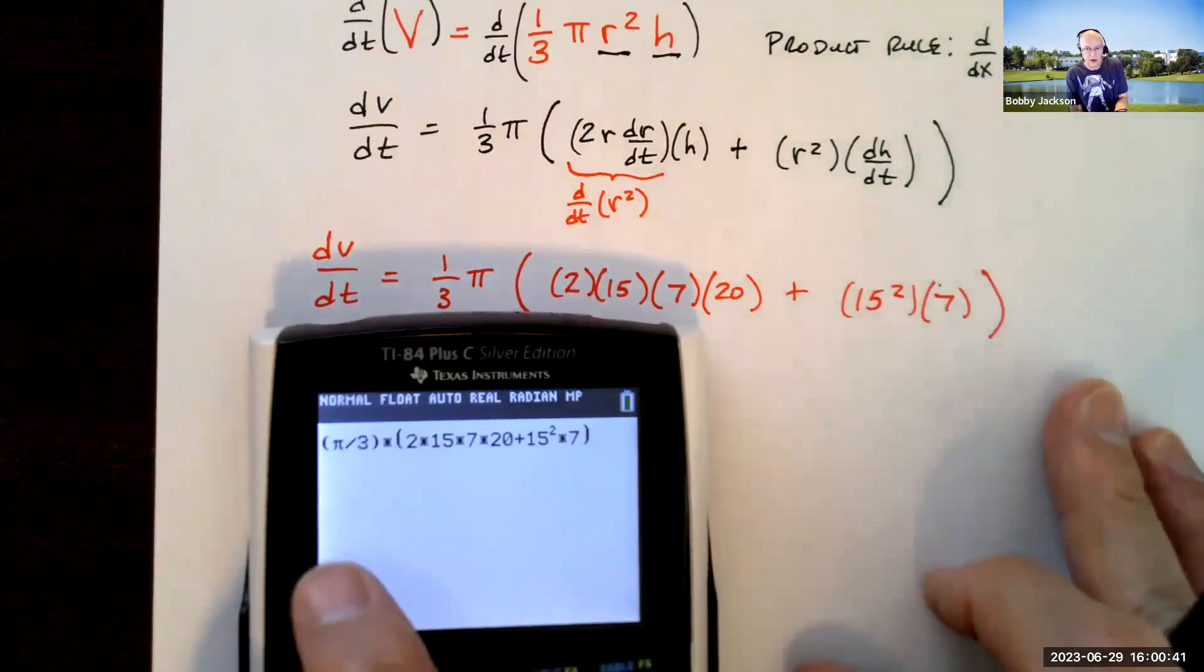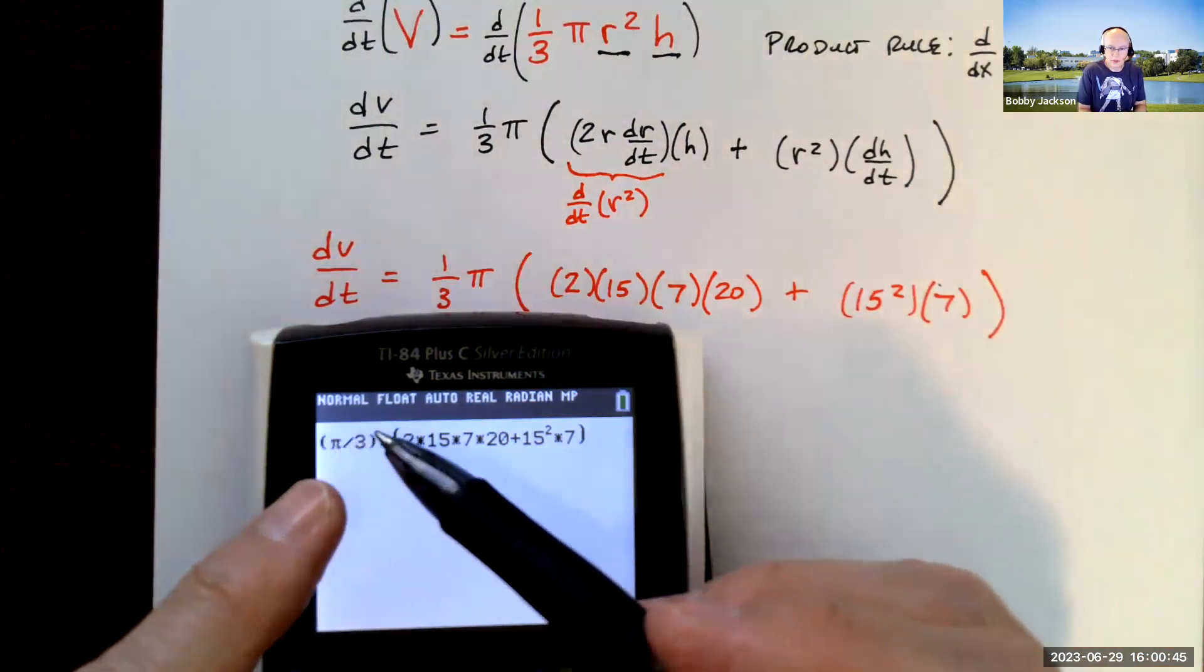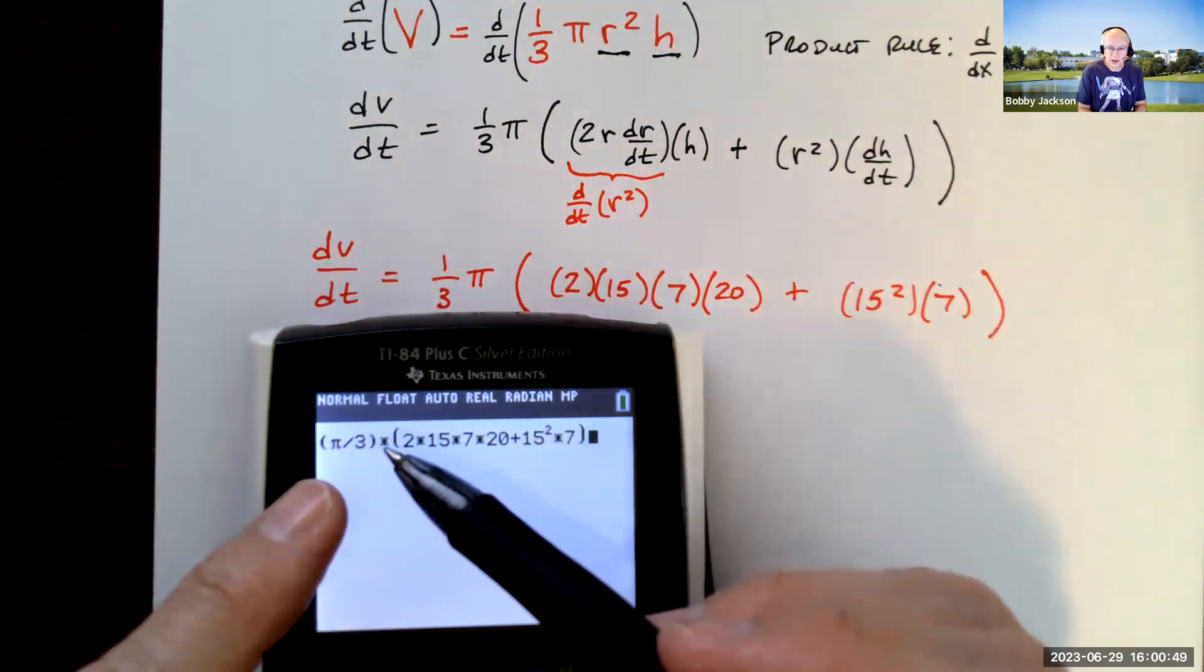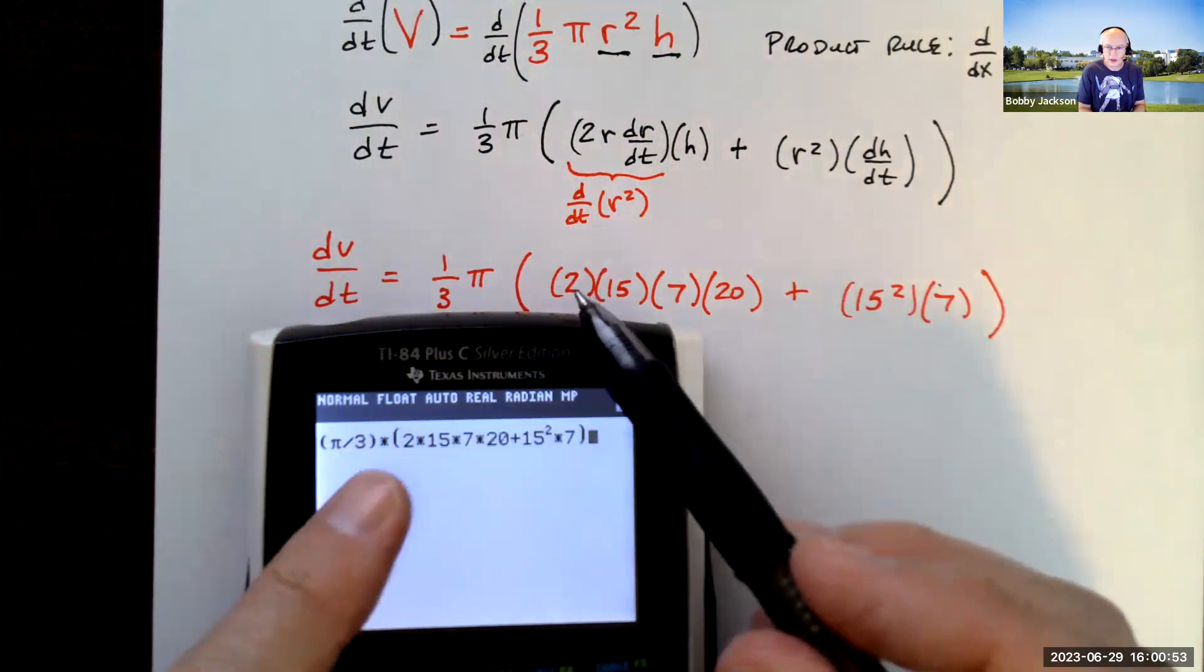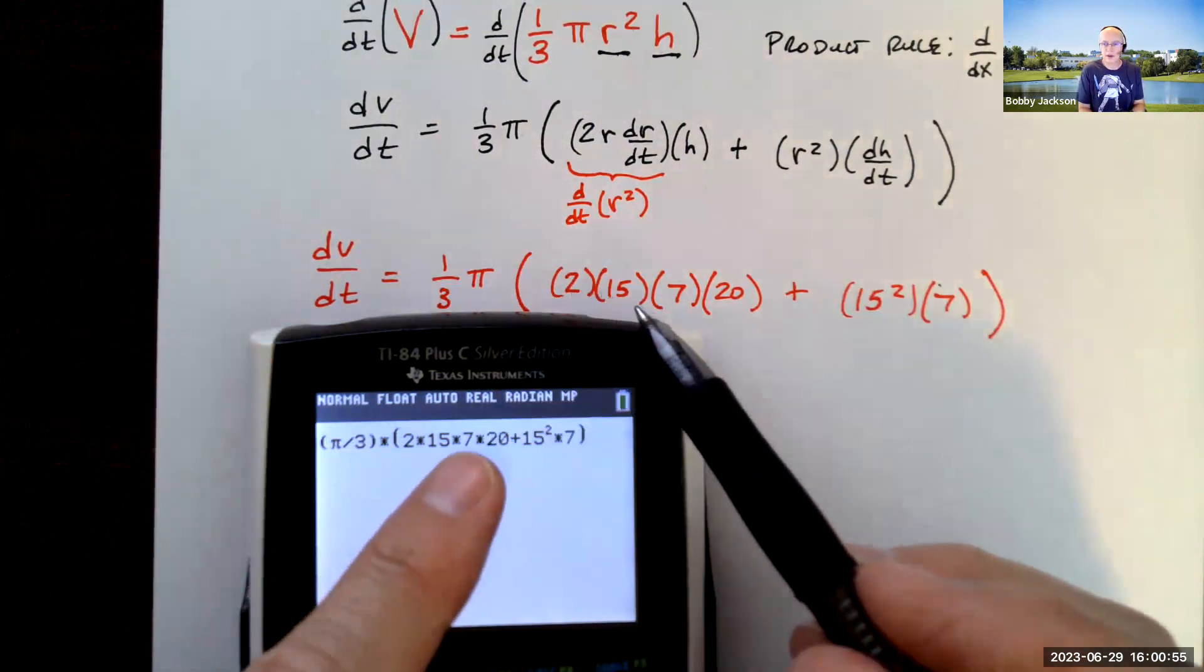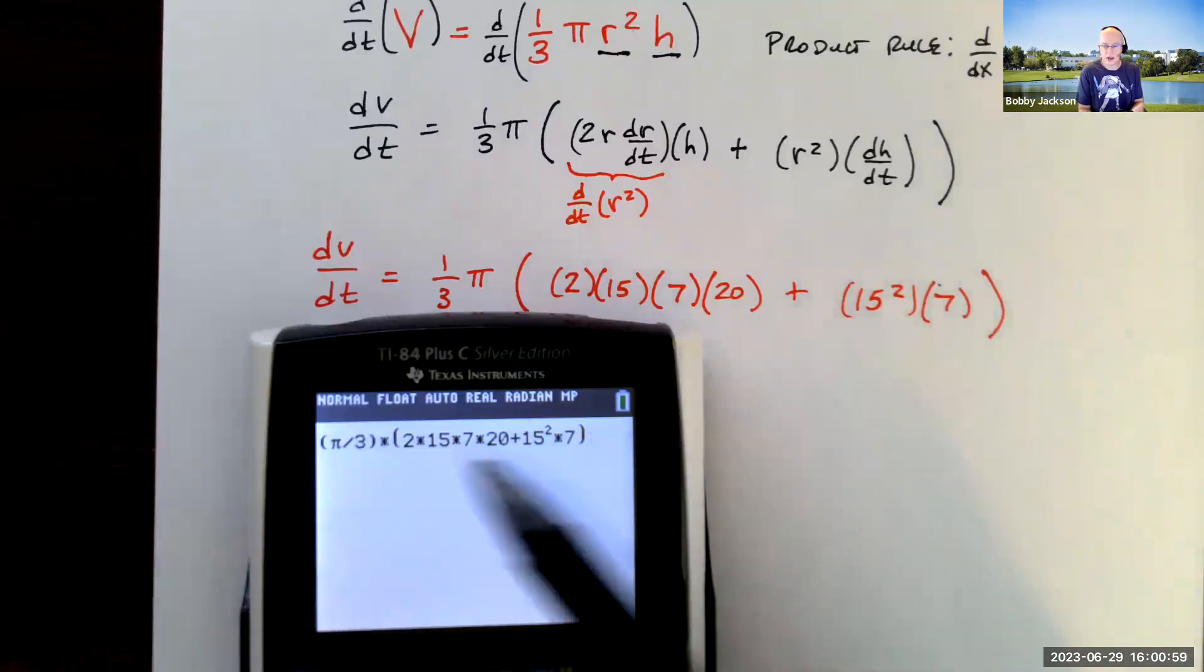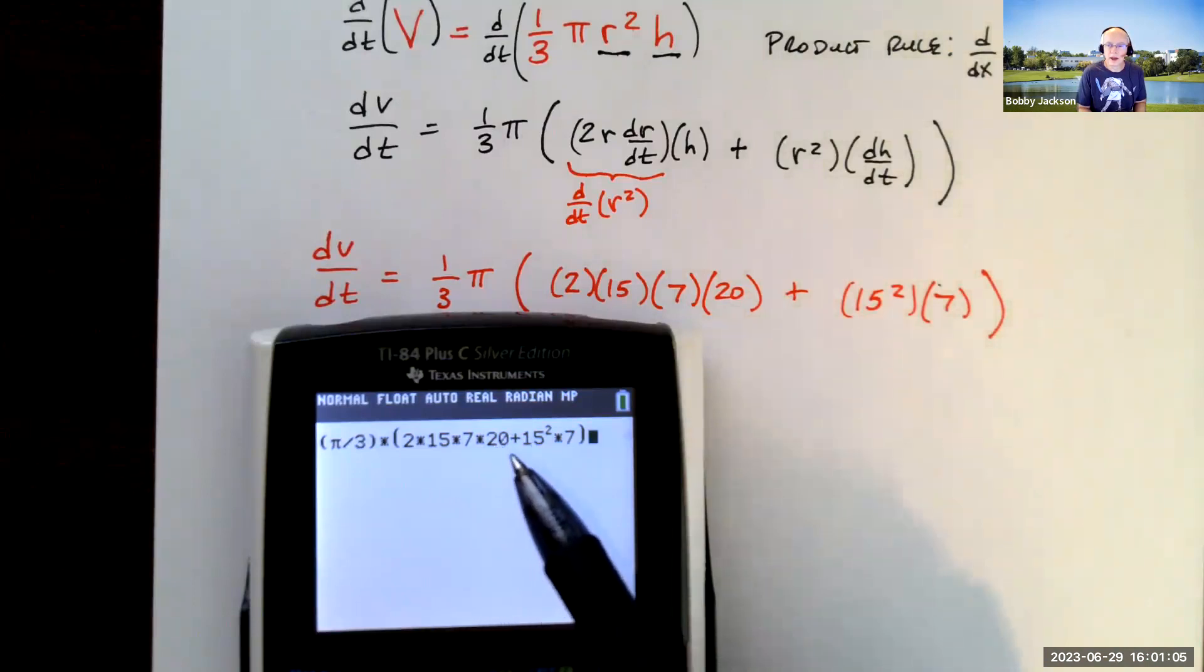Here's how it looked in my calculator. So instead of 1 third pi, I just wrote pi over 3. I like to put that in parentheses, just so there's no errors with calculating anything. Asterisk means times. And then I did parentheses 2 times 15 times 7 times 20 plus 15 squared times 7. I don't need any parentheses in there because the calculator will do the exponent first, then do multiplication left to right, and then finally the addition.